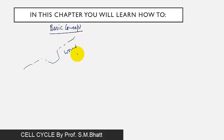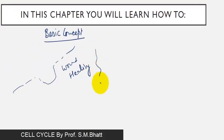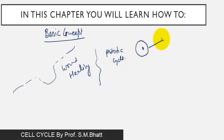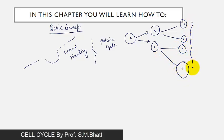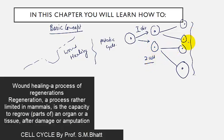Wound healing is the best example of the mitotic cycle — where one cell forms two cells. Each of those cells further forms two more cells. After the first division there are two cells, and after the second division there will be four cells.